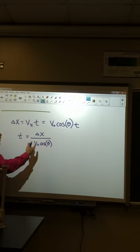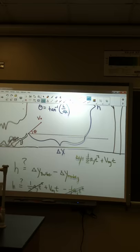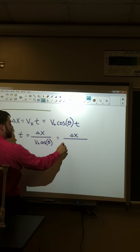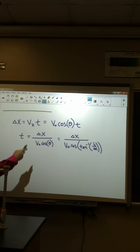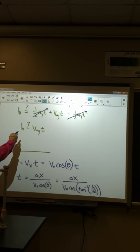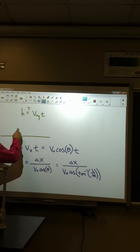Remember from above that theta is actually the inverse tangent of h over delta x. So I can replace that to get, and this looks a little weird. Okay, now we have an expression for t. Let's go back and plug that in for our t right here. Does this work out?